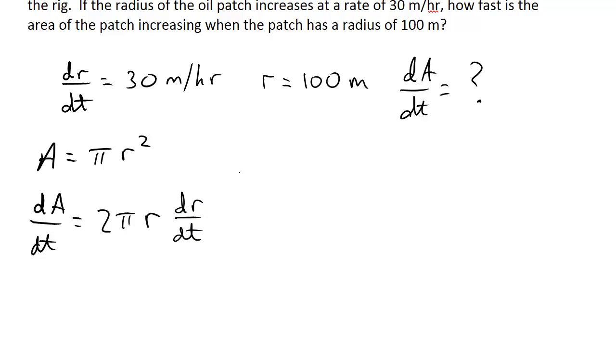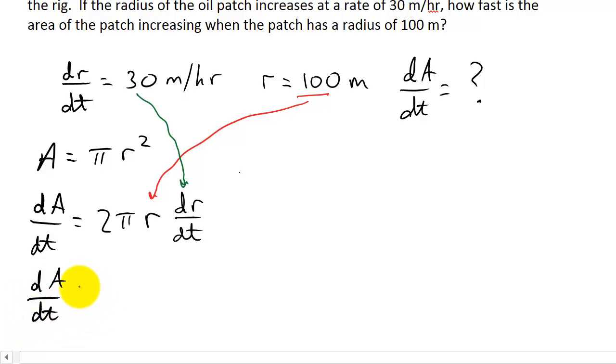All right, now they want to know how fast this area is changing when r is 100 meters. So we'll plug in 100 meters for r, and dr/dt is how fast the radius is changing so we'll plug that in. So we get the change in the area, how fast the area is increasing, is 2 times π times r which is 100 times dr/dt which is 30.